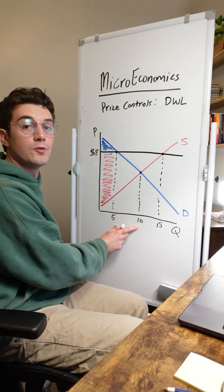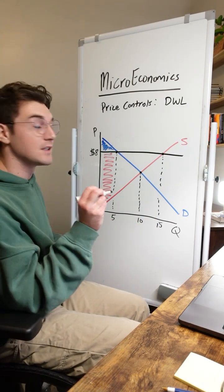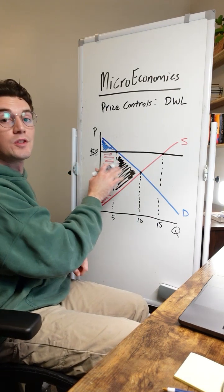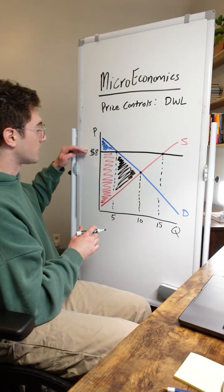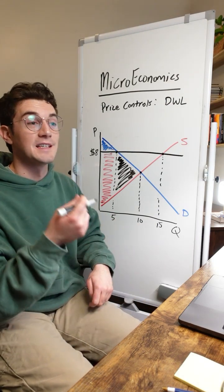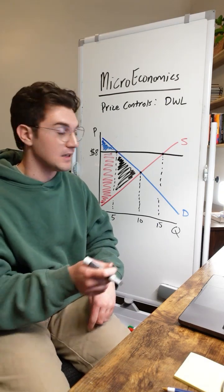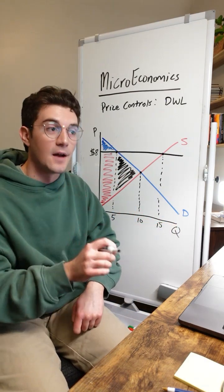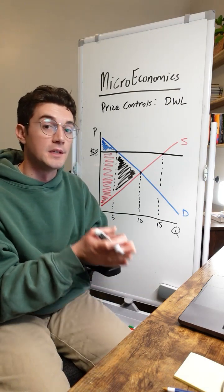No units are getting sold between these points. And it's because of that that this triangle right here is deadweight loss. This used to be consumer and producer surplus, but as a result of the floor and the adjustment to the equilibrium quantity and resulting decrease in economic activity, this surplus evaporated. It no longer exists. It's deadweight loss as a result of the government intervention.